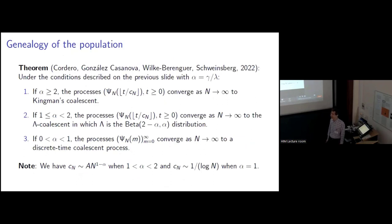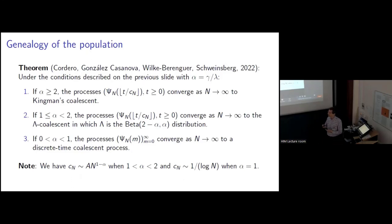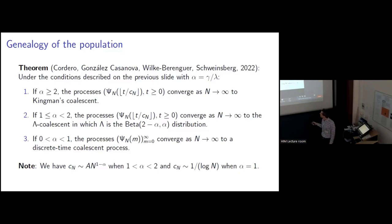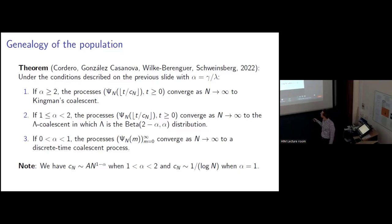Here is our result for the genealogy of the population, under the conditions we laid out, with alpha equal to gamma over lambda. If alpha is greater than or equal to 2, most individuals are emerging from dormancy very late in the spring, we don't see large families, and the ancestral processes converge to Kingman's coalescence. If alpha is between 1 and 2, large families happen more often and the genealogy converges to the lambda coalescence, where lambda is the beta distribution with parameters 2 minus alpha and alpha. When alpha is between 1 and 2, we have to wait order N to the alpha minus 1 years between these multiple mergers. When alpha is equal to 1, there are order log N years between multiple mergers. If alpha is between 0 and 1, we're in the case where we converge to a discrete time coalescent process because there are multiple large families in every generation.